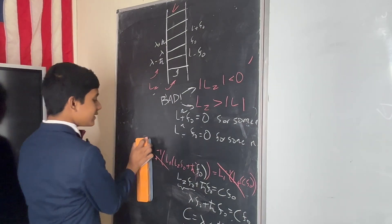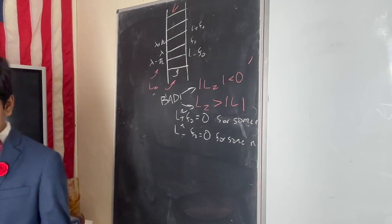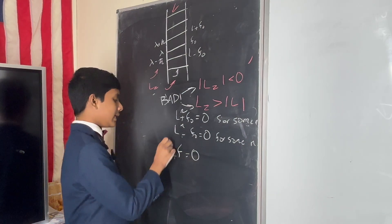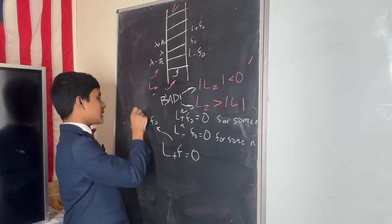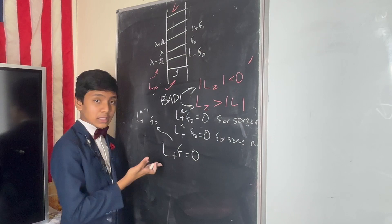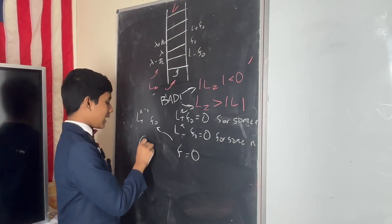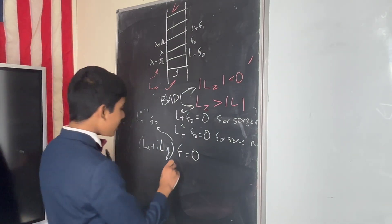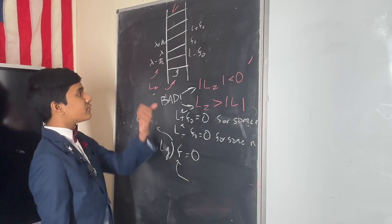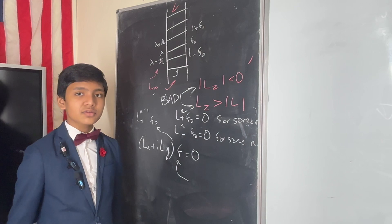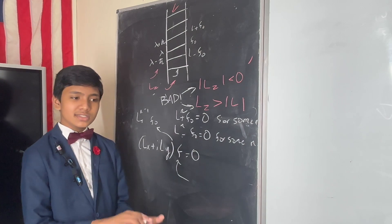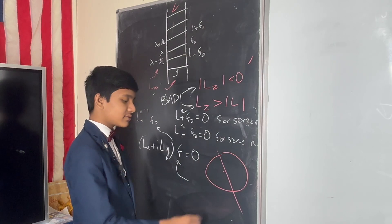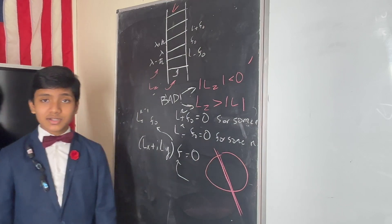So what happens when we apply the termination condition? That means at the end of the day, there is some function F such that L+ F equals zero, where F is f0 multiplied by L+ to the (N−1). Recall that L+ is just Lx plus i·Ly. So whatever F is, it's going to be related to the eigenfunctions on this ladder. How do we actually evaluate the eigenfunctions? Well, spoiler alert: it involves converting to spherical coordinates, which means we're going to have to save it for next time.